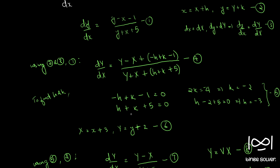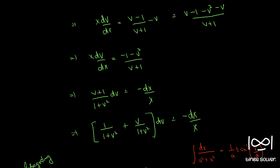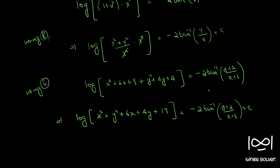So minus h is 3 and k is minus 2. Capital X equals x minus h equals x plus 3, and capital Y equals y minus k equals y plus 2. So our solution is correct, and I believe the answer given in the textbook is wrong. The textbook gives x plus 3 whole squared plus y plus 3 whole squared, which differs from our x plus 3 whole squared plus y plus 2 whole squared.